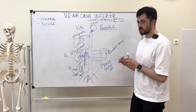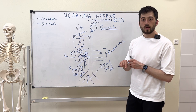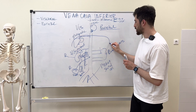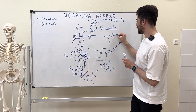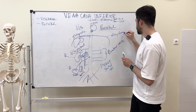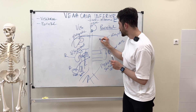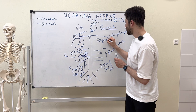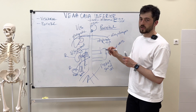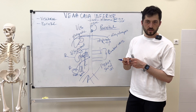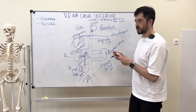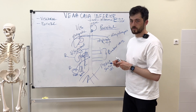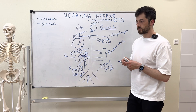The last parietal tributary involves the diaphragm. We have the inferior phrenic vein draining into the inferior vena cava. The superior phrenic vein drains into the azygos or hemiazygos system, representing a small area of anastomosis between the two venous systems.